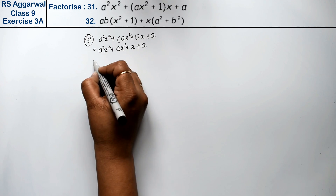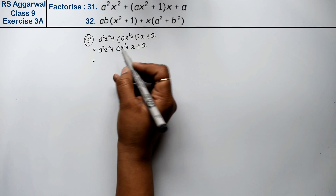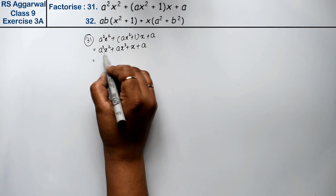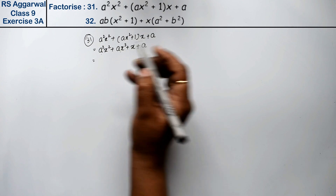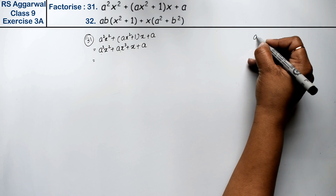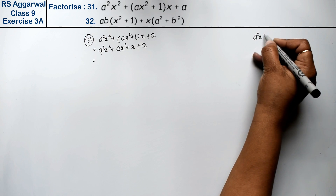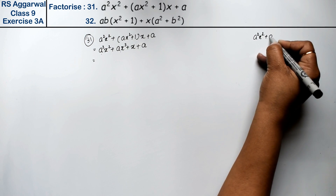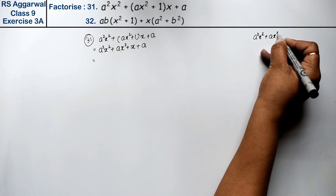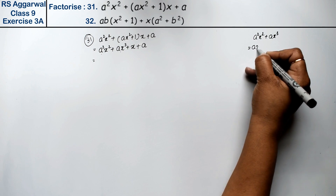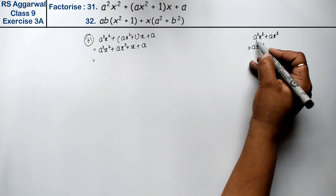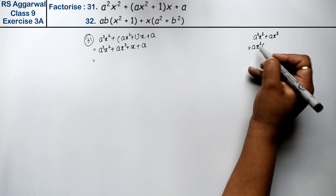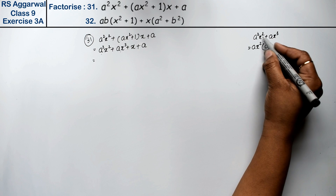Now let's see — in these two terms, if we remove ax² as a common factor from a²x² plus ax³, we take ax² common. What is left? Here, a is left, so 1 and a remain.